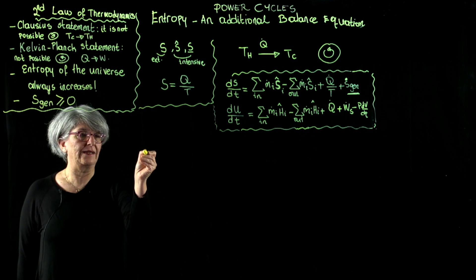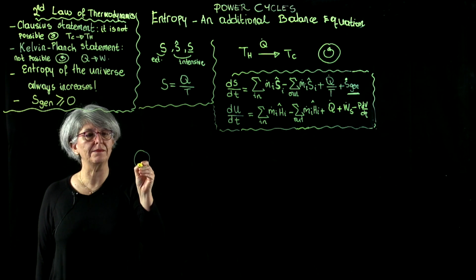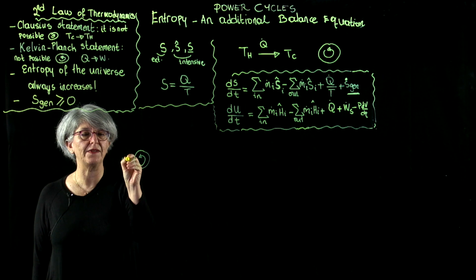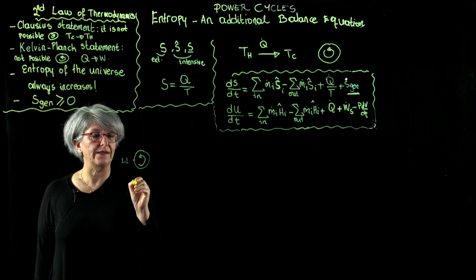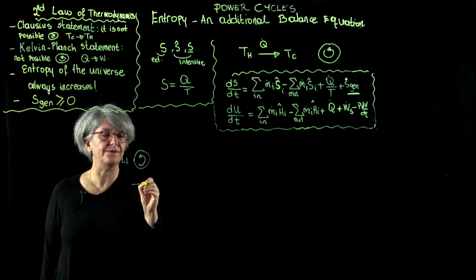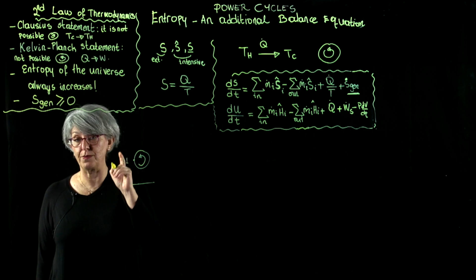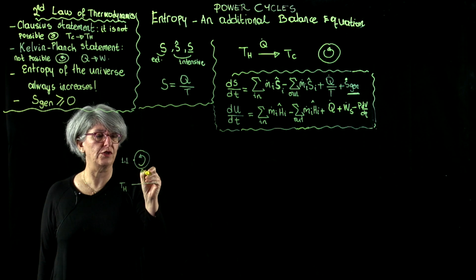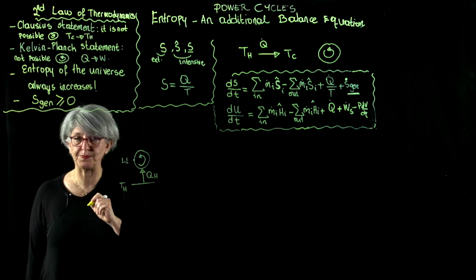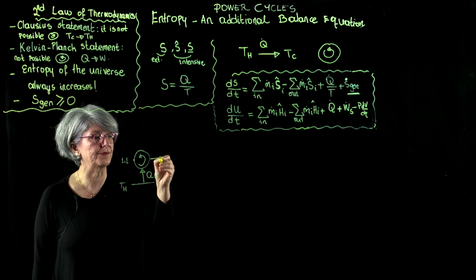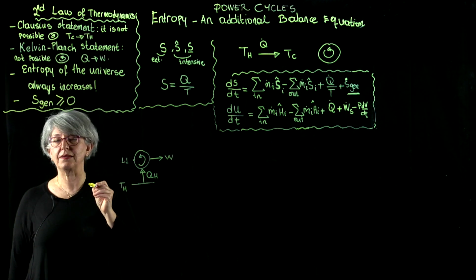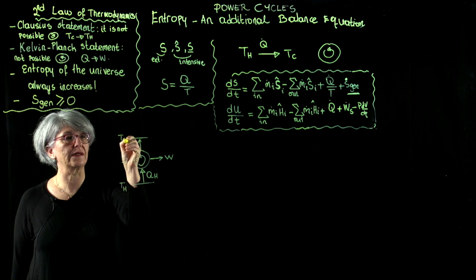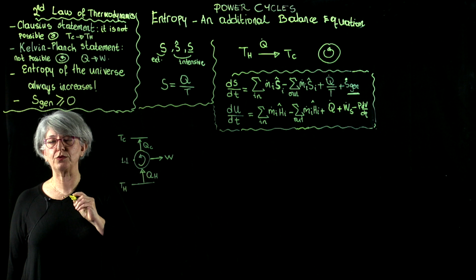Now, let's draw the simple block diagram. Power cycles are devices that operate in cycle. So they start from state one and finish at state one. They absorb heat from a source and generate work, but they have to discard some of the heat to a cool sink in order to be able to operate in cycle.